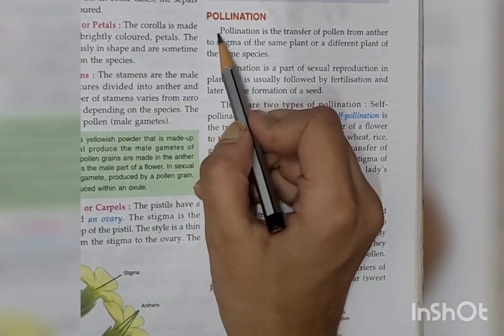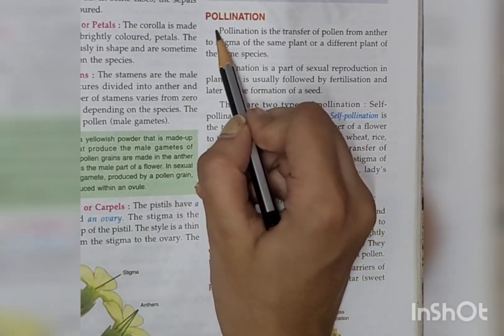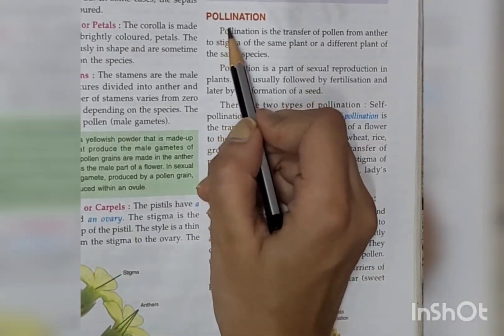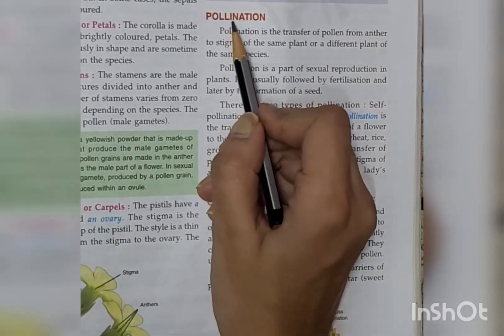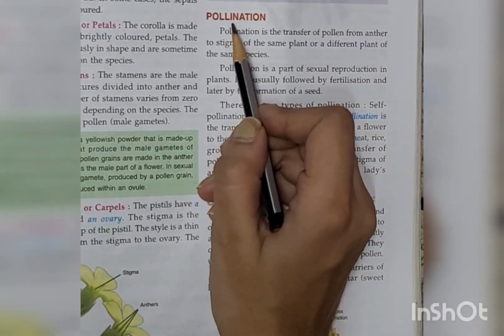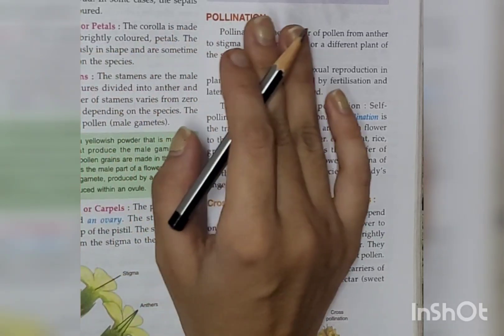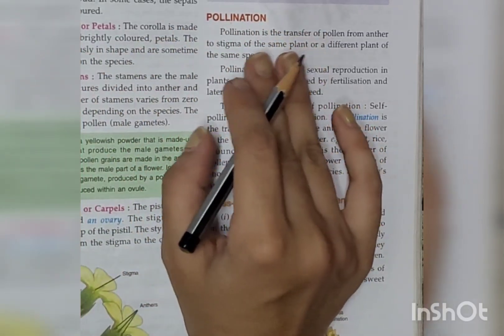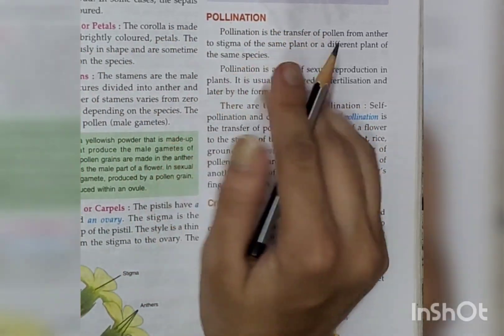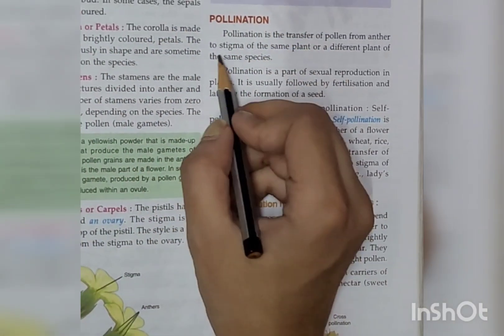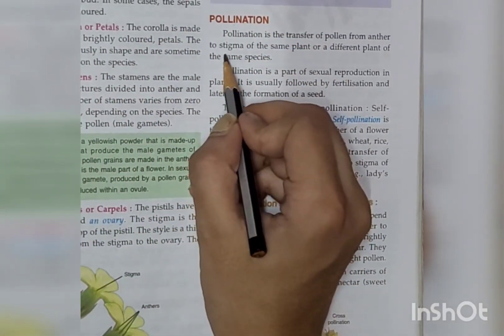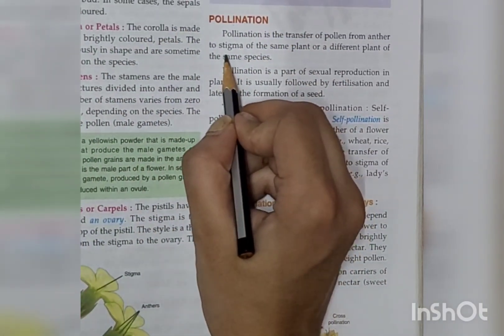Hi guys! In this video, we will discuss pollination. In the previous video, we have studied the whole flower structure — you can check it. In this video, we will use the terms stigma and pollen grain, so you should visualize them.